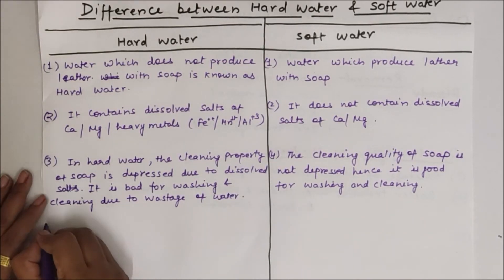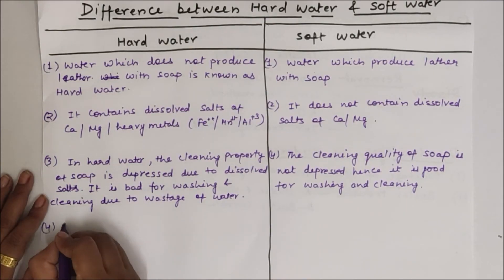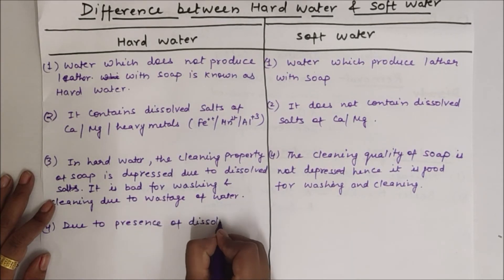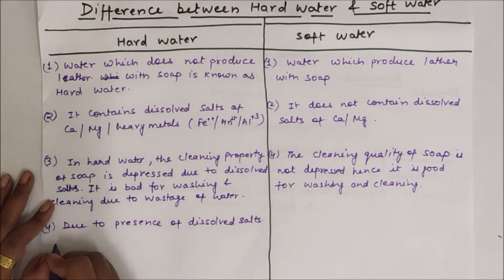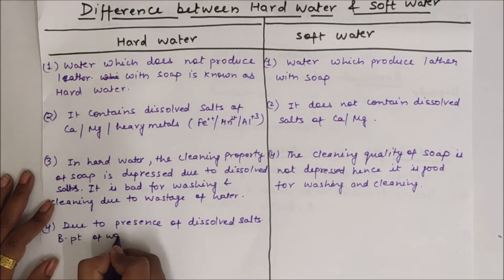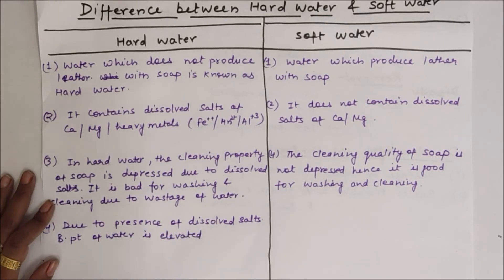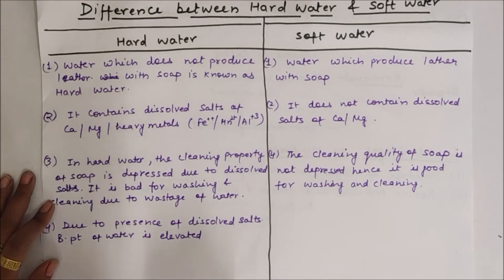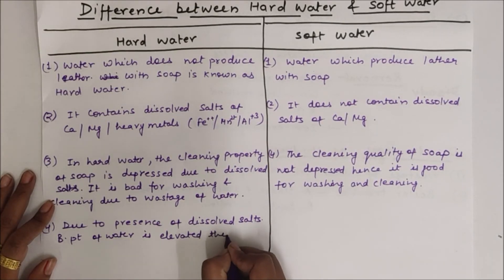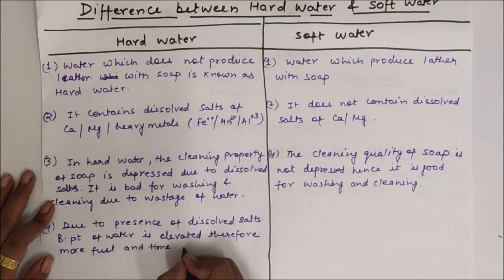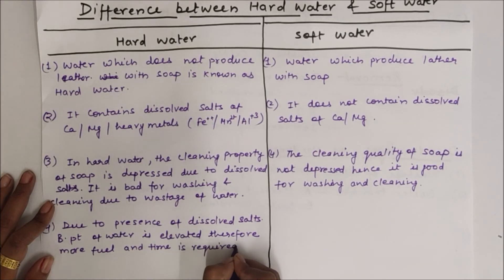Now the last difference: in hard water, due to the presence of dissolved salts, the boiling point of water is elevated. Therefore, if dissolved salts are present, the boiling point will increase, which leads to more fuel consumption. Hence more fuel and time is required for cooking.